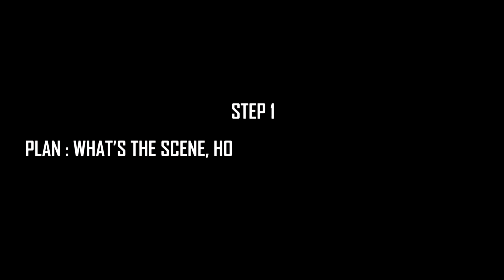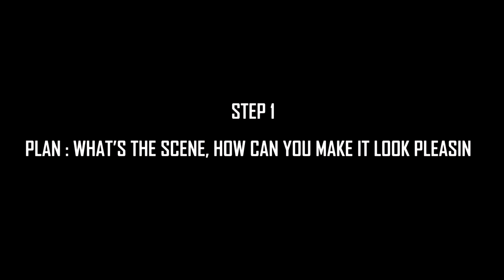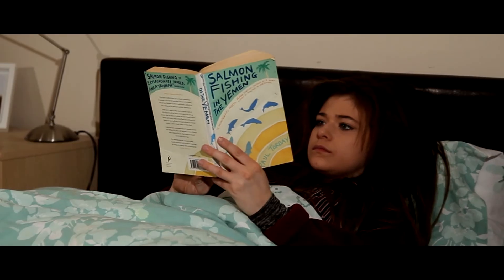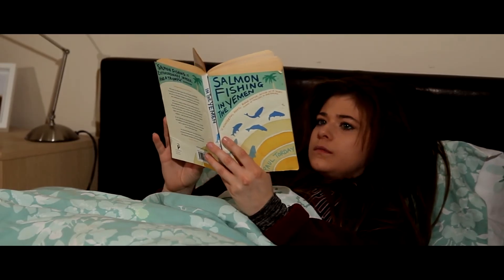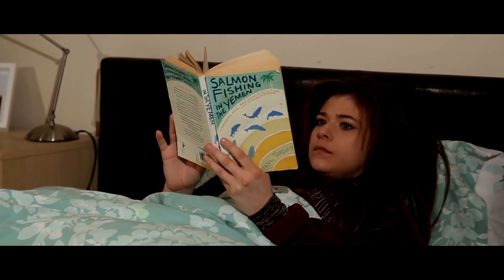Now we know the basic types of shots, let's move on to compositing a scene. Step one: what's the scene? How can you make it look pleasing to the eye? For example, here we have Claire situated in a bedroom.